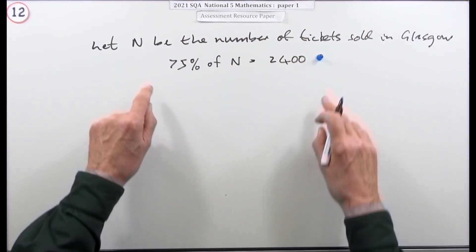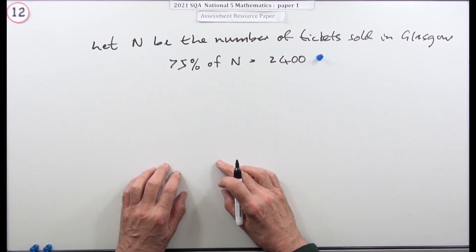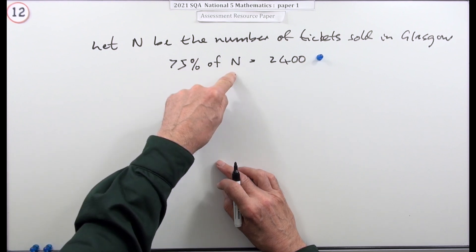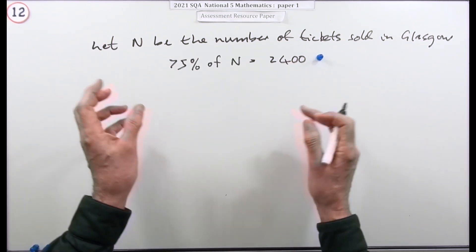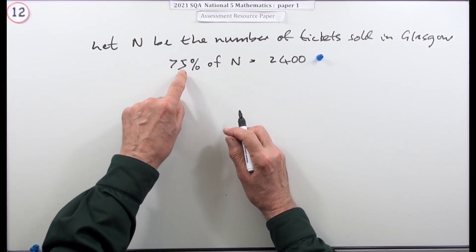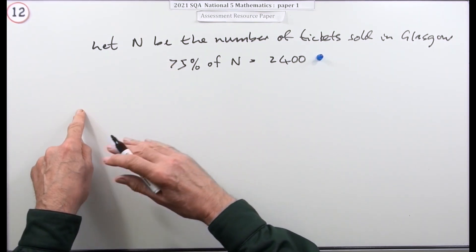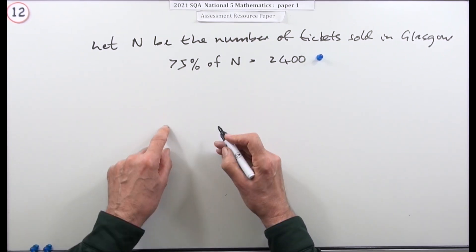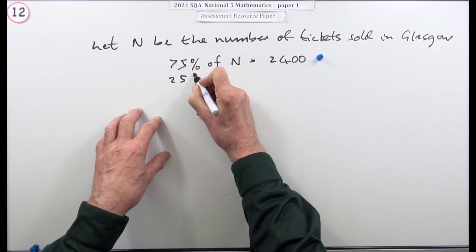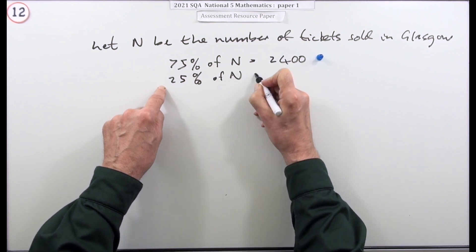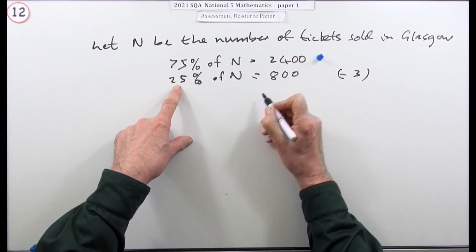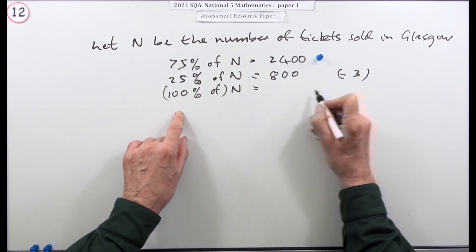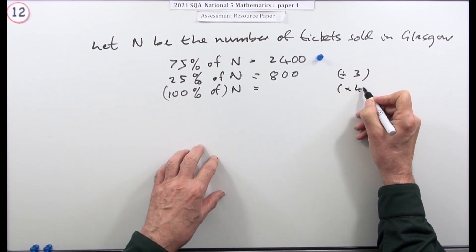Once you've identified N, state the equation: 75% of N is 2,400 — that's the first mark. Now, 10% isn't a useful stepping stone but 25% is. So divide 2,400 by 3 to get 25%, which is 800. Then 100% — the whole of N — is 4 times that, so N equals 3,200.